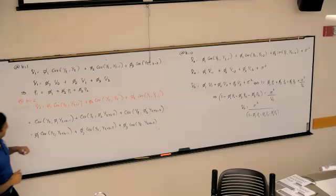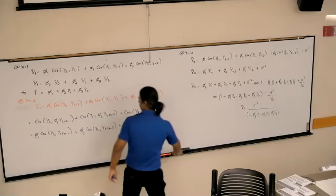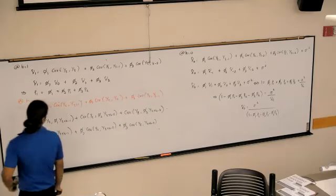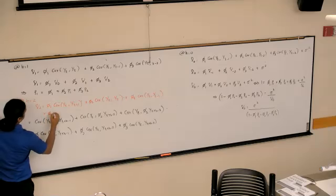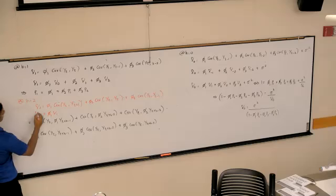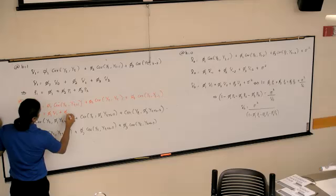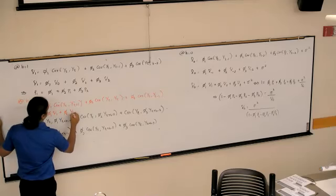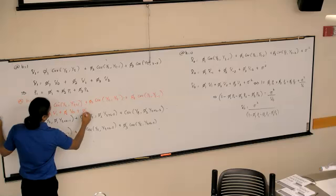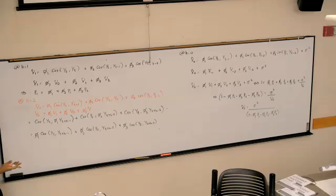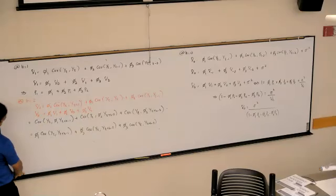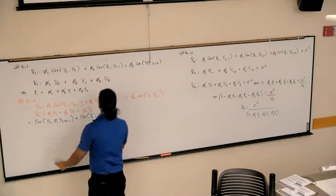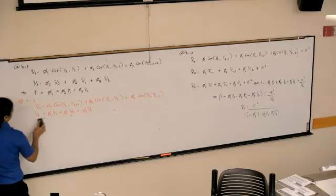So, gamma 2 equals phi 1 gamma 1, plus phi 2 gamma nought, plus phi 3 gamma minus 1, which is the same as gamma 1. Correct.